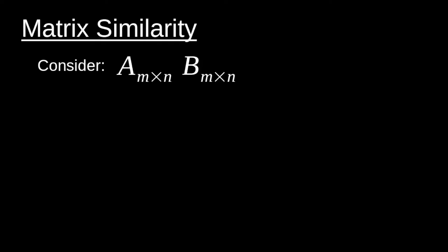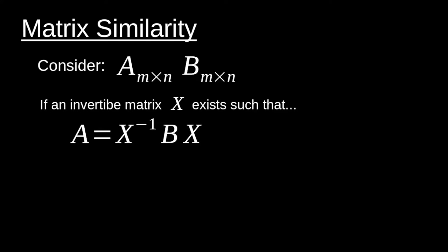If we consider two different matrices, A and B, for simplicity throughout this video we're just going to assume they're square. We can only say that these two matrices A and B are similar if an invertible X matrix exists such that this relationship between matrix A and matrix B holds. So if we have matrix A and we compute the matrix product of X inverse by B by X, that's why X needs to be invertible, and we get back our A matrix, then A and B are similar.